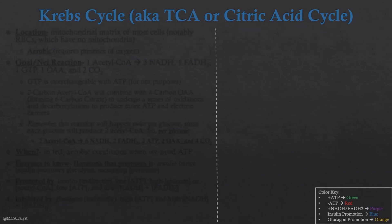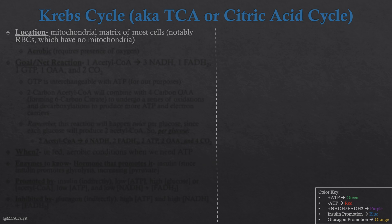The Krebs cycle is also called the TCA cycle or the citric acid cycle — they're all interchangeable. It is going to be taking place in the mitochondrial matrix of most cells. Red blood cells do not have mitochondria, so they are not going to be doing the Krebs cycle. Because it takes place in the mitochondrial matrix, it is also going to be aerobic, meaning the Krebs cycle requires the presence of oxygen.